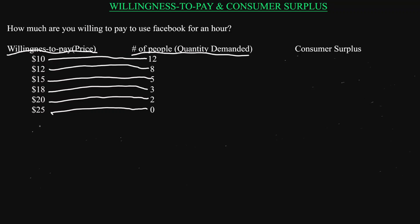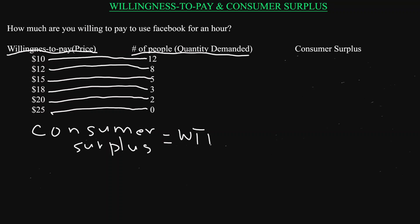The consumer surplus is basically equal to willingness to pay minus the price that you actually pay. So it's how much you are willing to pay minus the price that you actually pay — the surplus is how much you gain over the price.